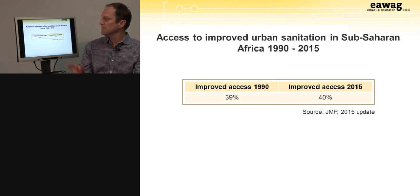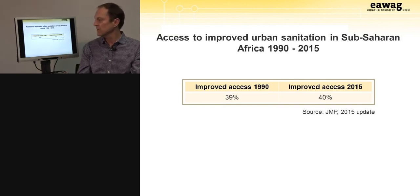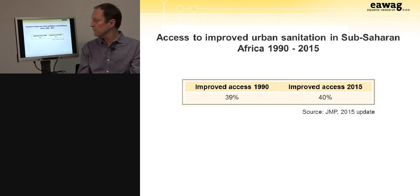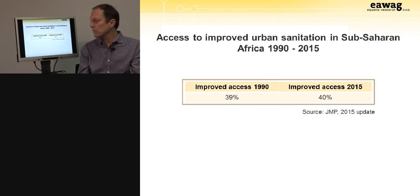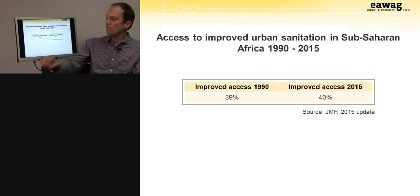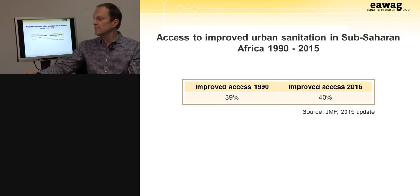Improved access to sanitation in urban sub-Saharan Africa went from 39% in 1990 to 40% in 2015, showing that we've only made progress by 1% in sanitation in urban areas. The reason for that is the complexity in dealing with service provision for these notoriously difficult and complex areas.